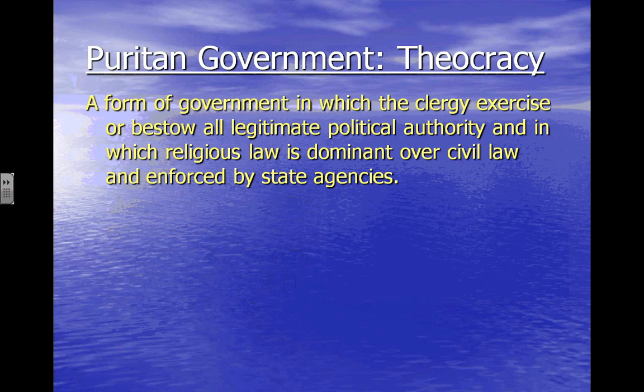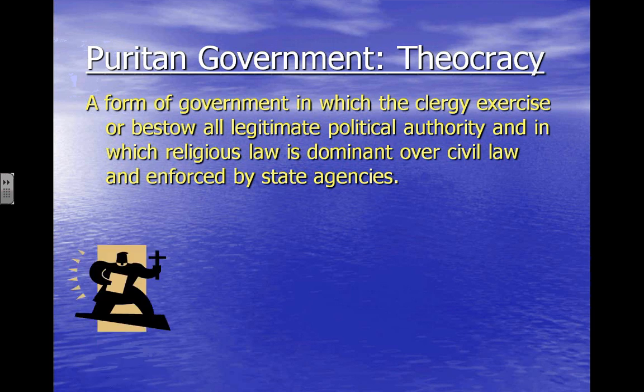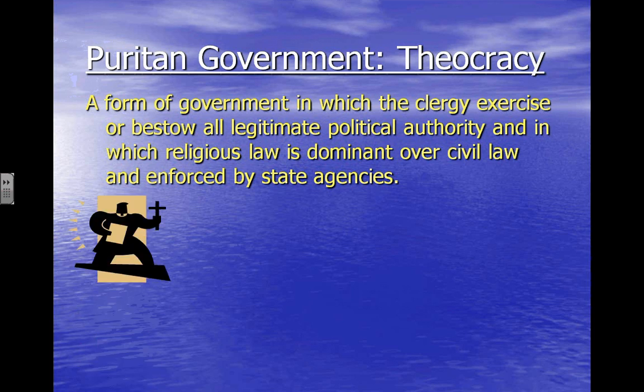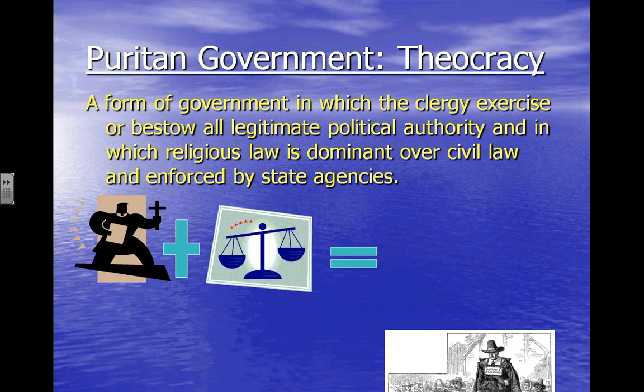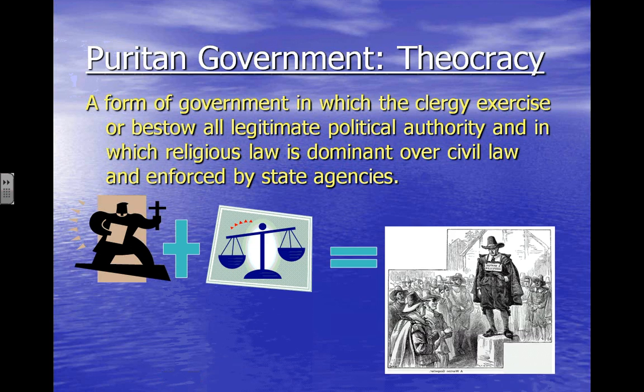A little bit more about theocracy: it's a form of government in which the clergy bestows all legitimate political power. So there's the clergy plus the laws — which equals this poor fellow being humiliated for gossiping. That is what happened oftentimes in Puritan society. If you committed adultery, if you committed one of those sins from the Ten Commandments, if you practiced some kind of witchcraft, that was punishable — and it could be punishable by death in a Puritan society.